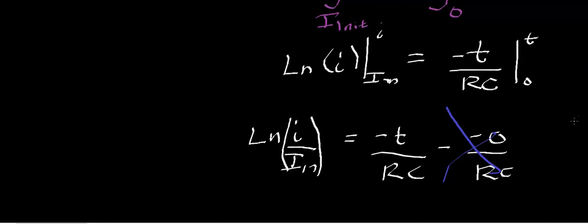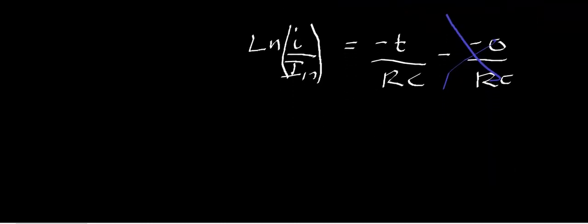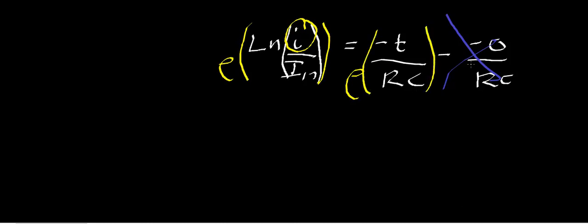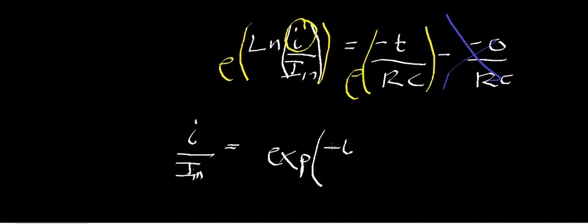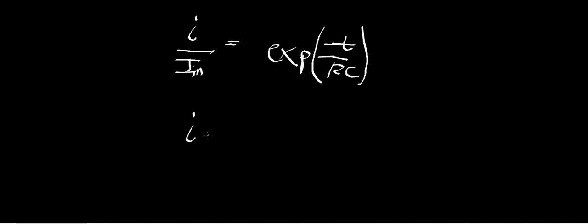We're solving for instantaneous current, so we need to remove the natural log by exponentiating both sides. This gives: i/i_initial equals e to the power of negative t/RC. Multiplying both sides by the initial current: instantaneous current i equals initial current times e to the negative t/RC.